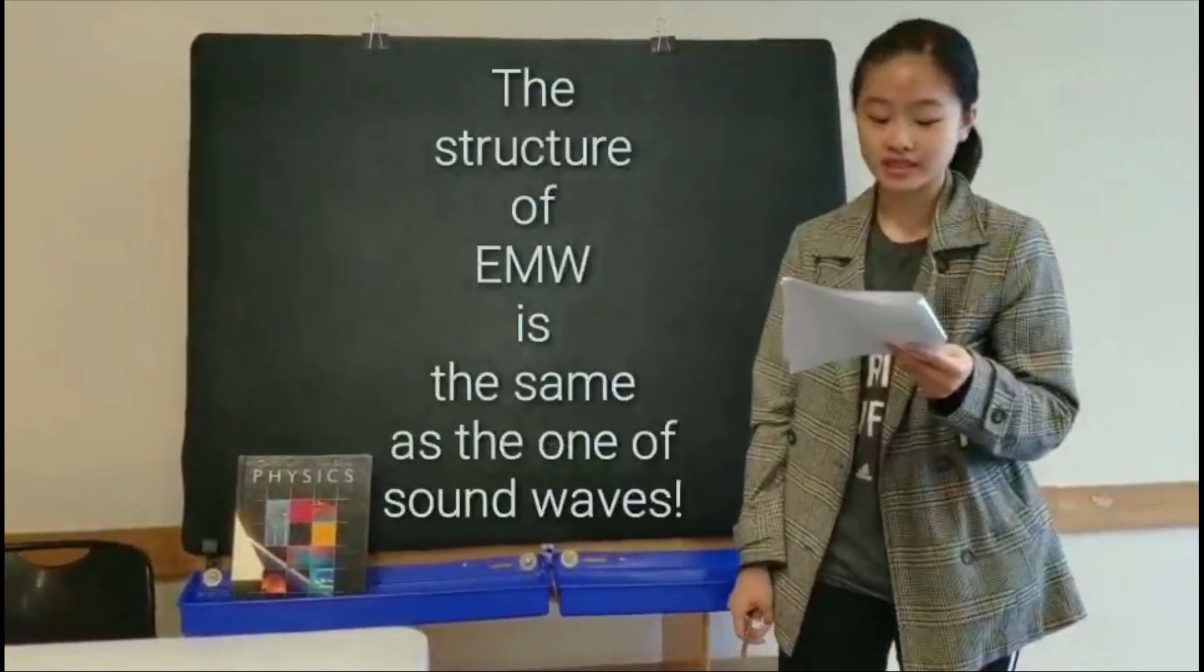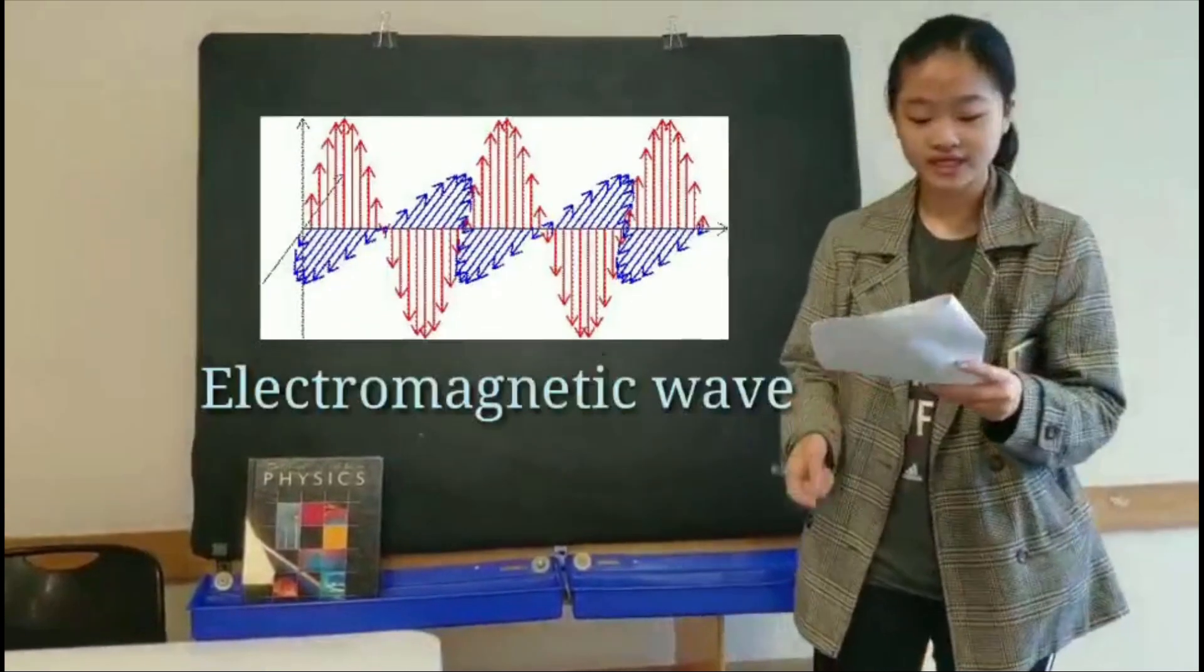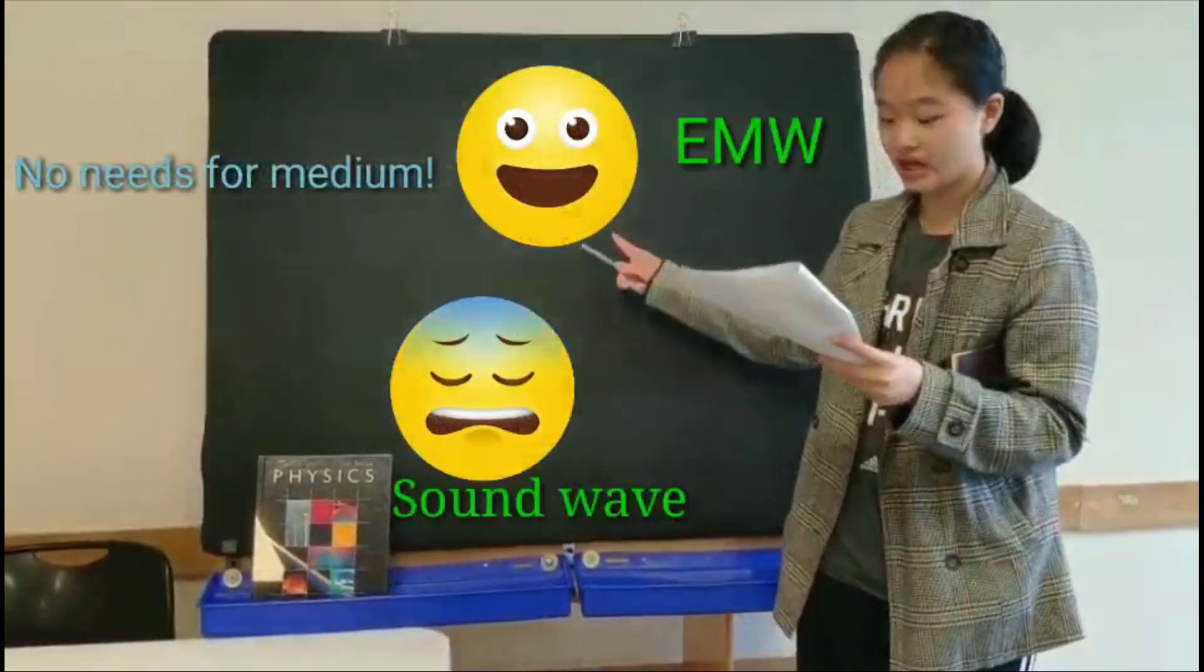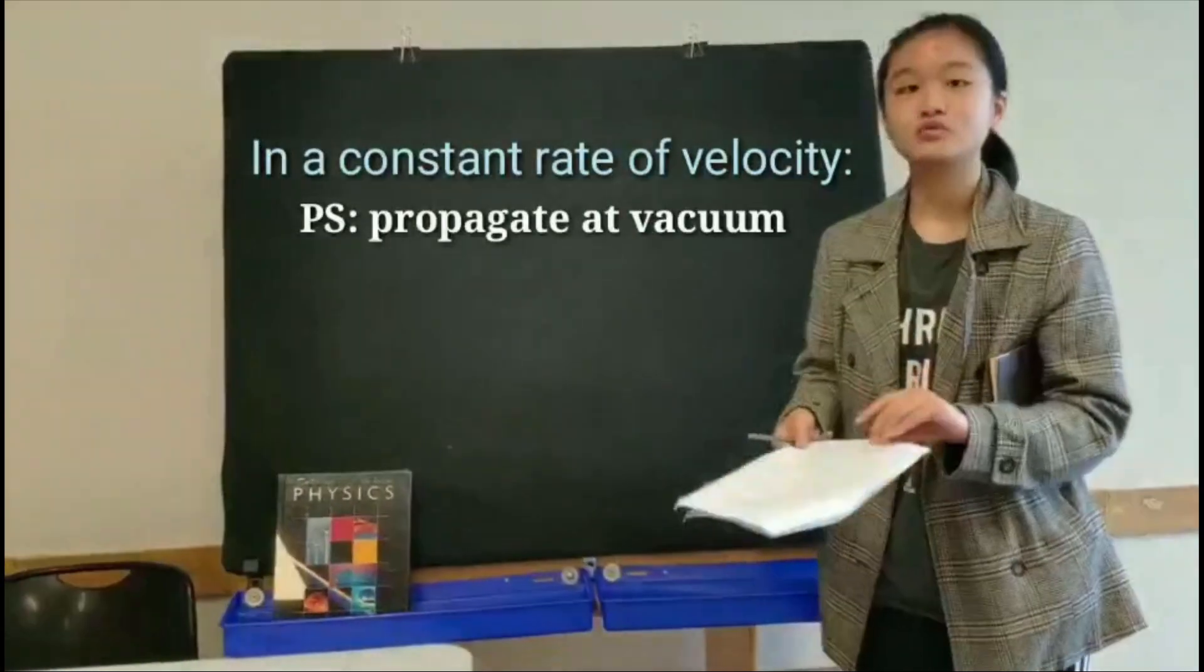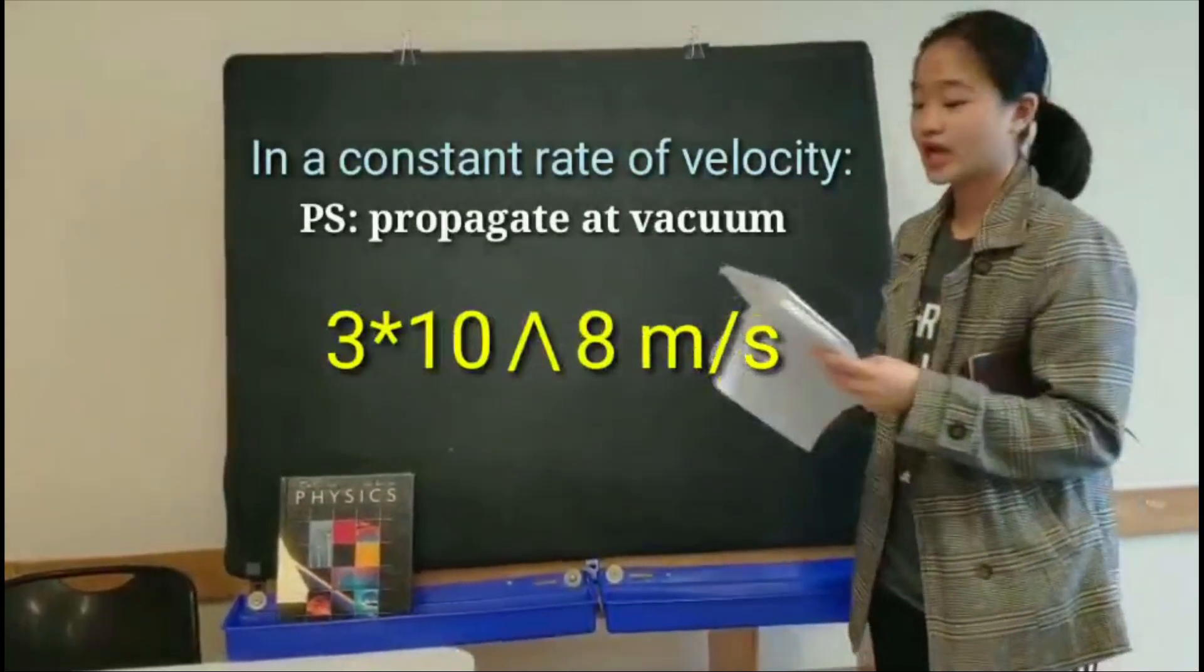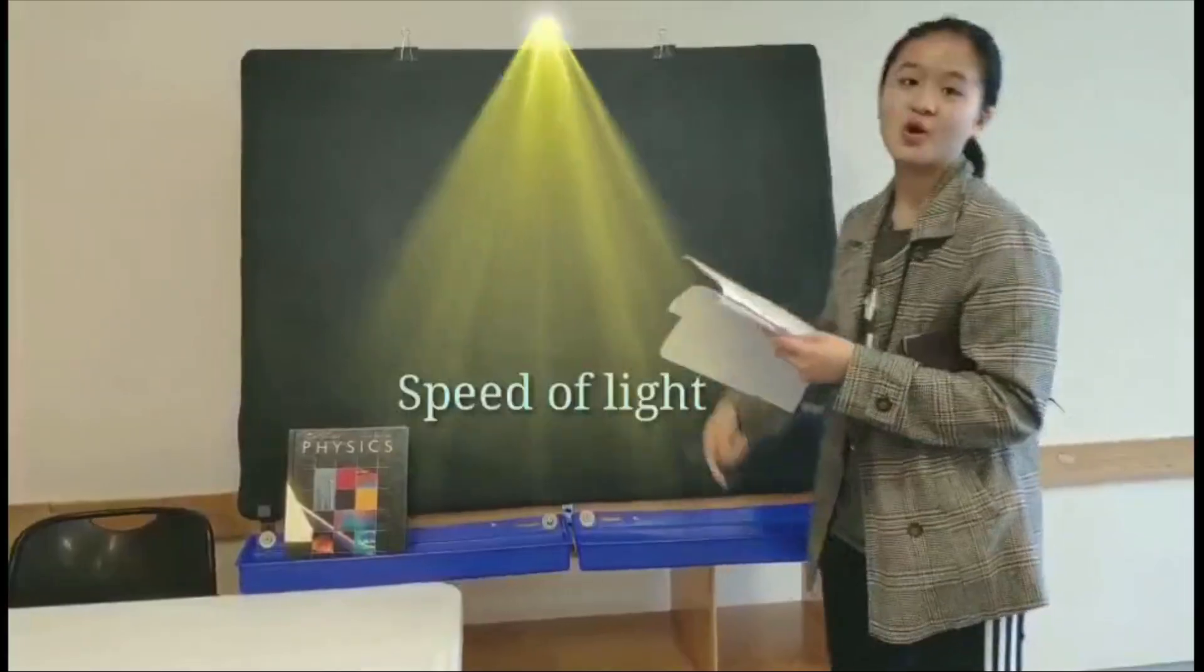The structure of EMW is the same as one of sound waves. But what's different is that EMW doesn't need mediums to propagate, and it can propagate as vacuums. In addition, the EMW propagates in a constant rate of velocity, which is 3 times 10 to the power of 8 meters per second. Well, you know, the speed of light.